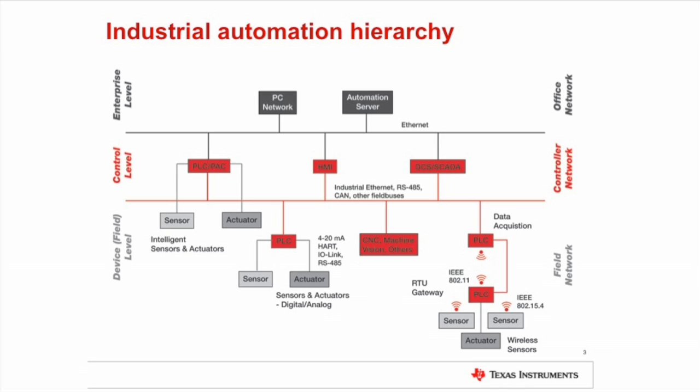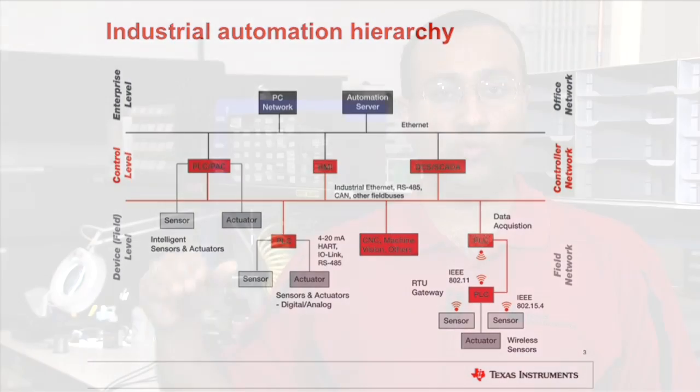For example, a programmable logic controller at the control level could turn on a valve at the field level, allowing fluid to flow in that oil refinery. A pressure sensor could then measure the pressure, or a level sensor could measure the level, and feed that information back to the programmable logic controller to close this control loop.